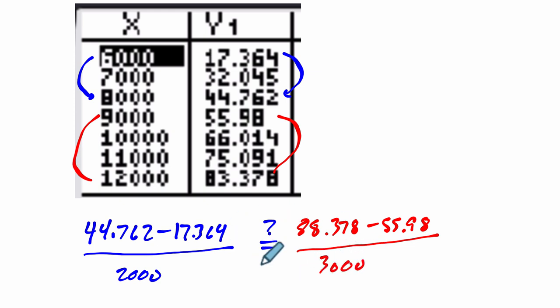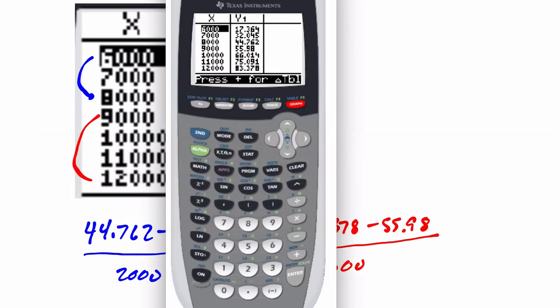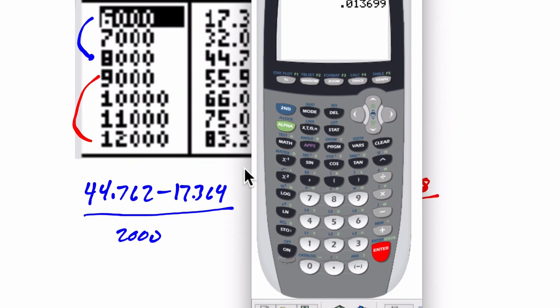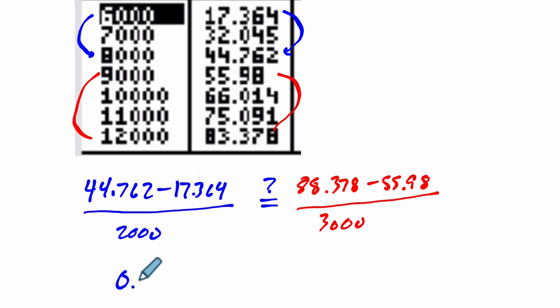And again, I'm going to take out my calculator. So on the left-hand side here, quit out, let's do the calculation. I'm going to use parentheses to enclose my numerator. 44.762 minus 17.364 divided by 2,000. And we get 0.013699. Okay, so write that down. 0.013699. That's our average rate of change. And this just means that on average, it took about 0.01 of a year for every dollar of interest that we gained over this time period, between 6,000 and $8,000. It took a really small amount of time for every single dollar that we got. It's quick.